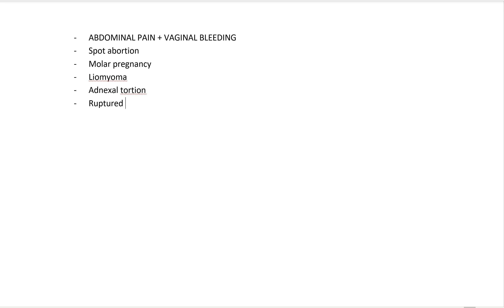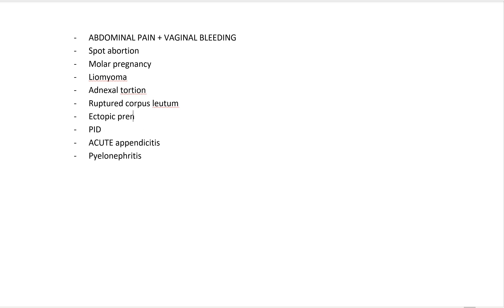For a female with abdominal pain plus vaginal bleeding, the differentials include ectopic pregnancy, spontaneous abortion, molar pregnancy, degenerating leiomyoma, adnexal torsion, ruptured ectopic pregnancy, ruptured corpus luteum, pelvic inflammatory disease, acute appendicitis, and pyelonephritis.